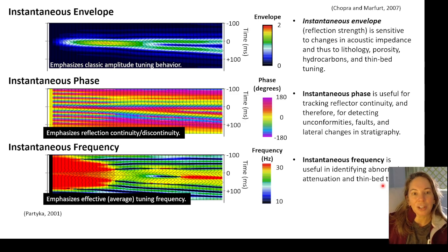While the instantaneous phase is great for tracking those reflector continuity like I showed you, and can help us detect unconformities and faults in those lateral changes in stratigraphy that might be more hidden or more subtle. And then instantaneous frequency is great for helping us identify abnormal attenuation, so maybe the presence of hydrocarbons, as well as the thin bed tuning.